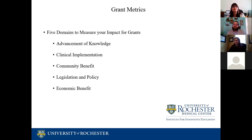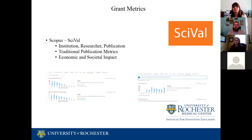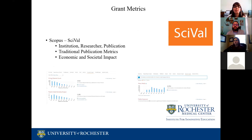The library is available to assist with research impact metrics helpful when applying for grants. Broadly there are five domains to measure your impacts: advancement of knowledge, clinical implementation, benefits to the community, legislation and policy, and economic benefit. The first tool I will discuss is SciVal, available through Scopus. SciVal is a great place to start for traditional citation-based impact metrics. It also offers options to measure traditional publication metrics — both print and online — as well as how research has been used for patents. You can measure the impact of the entire institution, an individual or group of researchers, or a collection of publications.